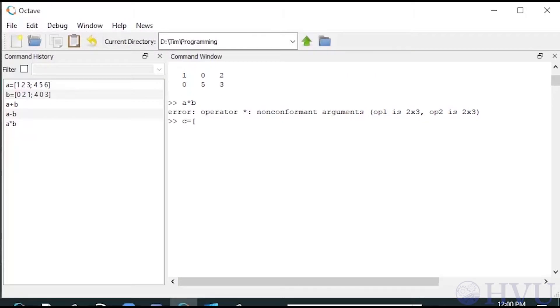C equals negative 2, 1, semicolon, 0, 3. We can multiply C times A, since the number of columns in C is 2, which matches the number of rows in A.